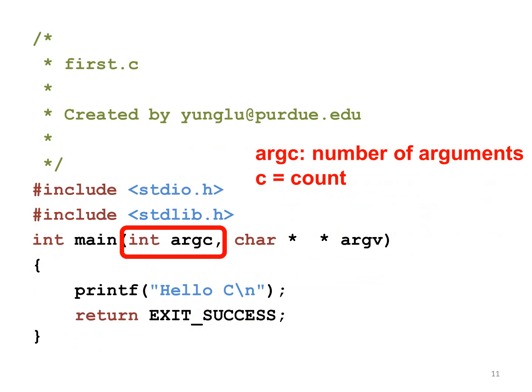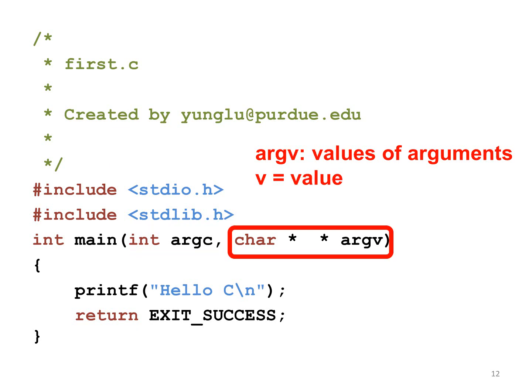The first argument, argc, means the number of arguments — here, C stands for count. The second argument, argv, means the values of the arguments — here, V stands for value.